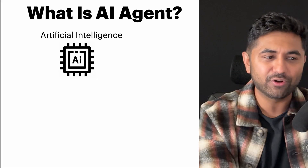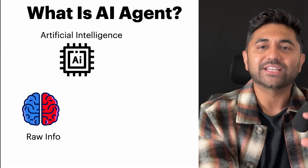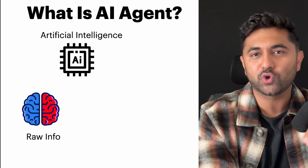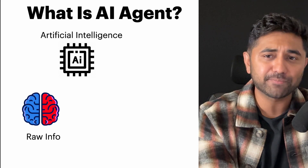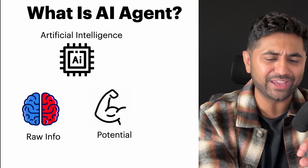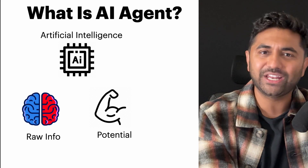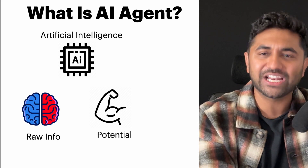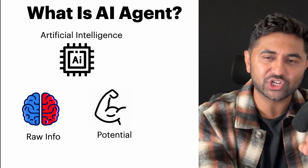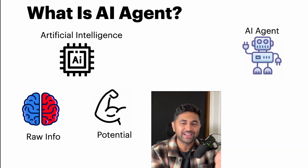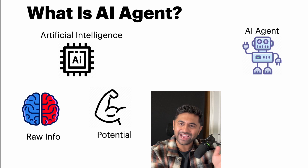AI stands for artificial intelligence. Think of it this way — let's say this robot has all of your health records: your data on what time you wake up, your blood pressure, everything. It has the potential to tell you to exercise more or reduce salt intake. But that's where it stops. Artificial intelligence has the data and the potential, however it cannot do things for you.